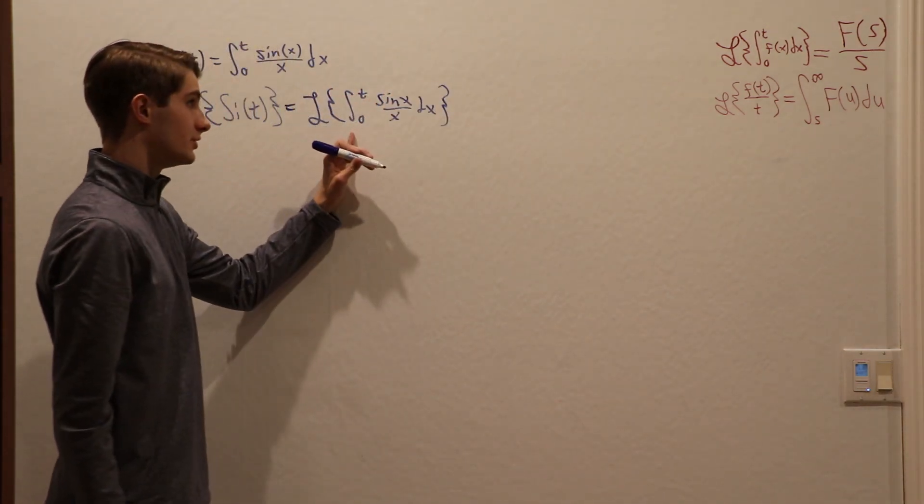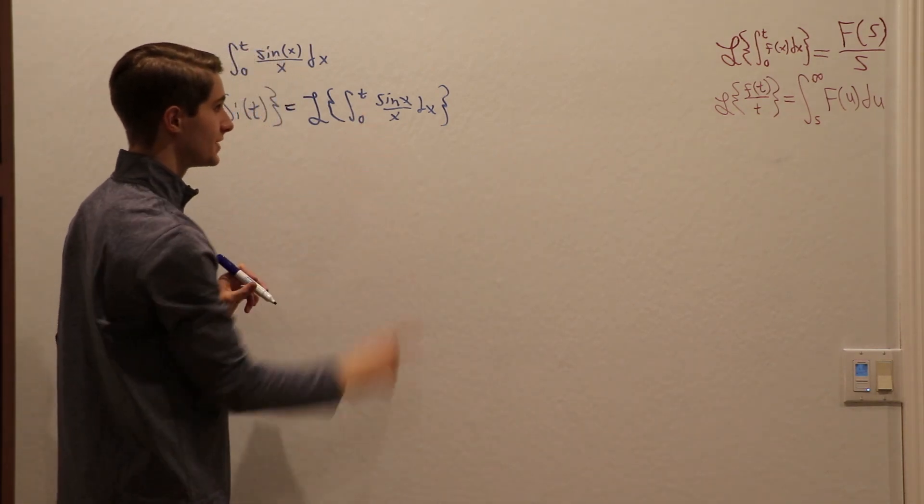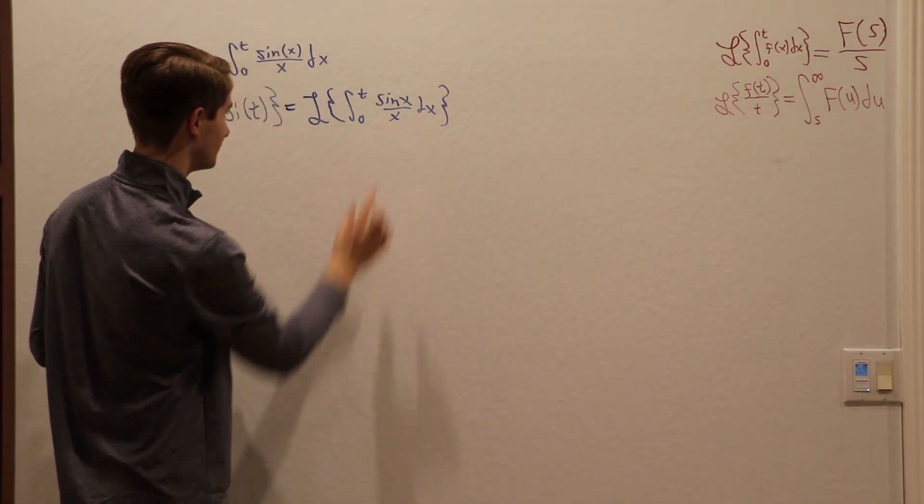To get rid of this integral, we can use the fact that the Laplace transform of an integral from 0 to t is just f of s over s, where f of s is the Laplace transform of the inside function.